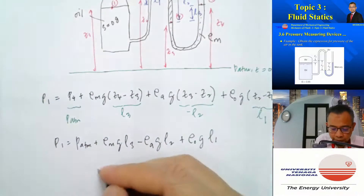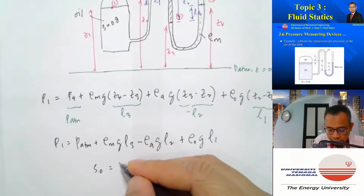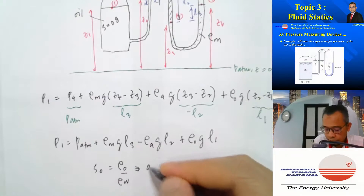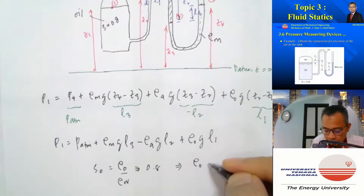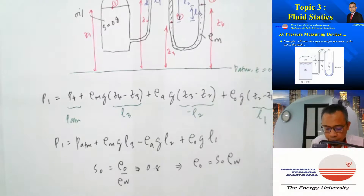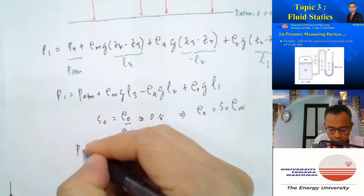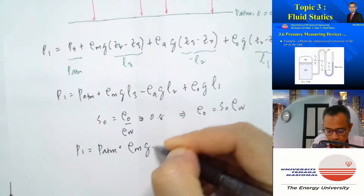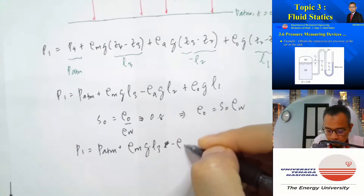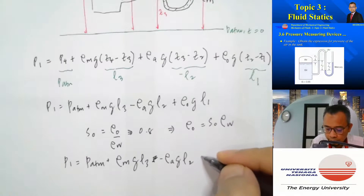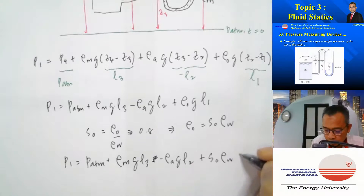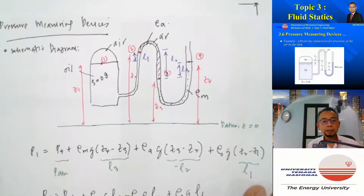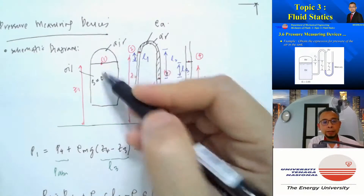The oil density is given in terms of specific gravity S_oil, where S_oil = rho_oil / rho_water = 0.8, so rho_oil = S_oil × rho_water. Therefore the final expression is: p1 = p_atm + rho_mercury × g × l3 − rho_a × g × l2 + S_oil × rho_water × g × l1. That is the expression for the pressure of air inside the tank.